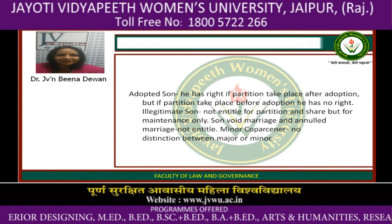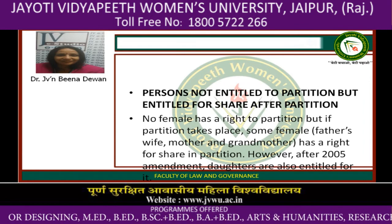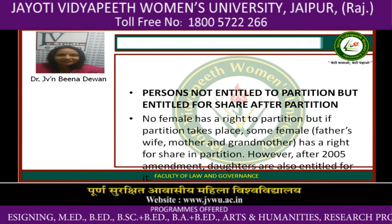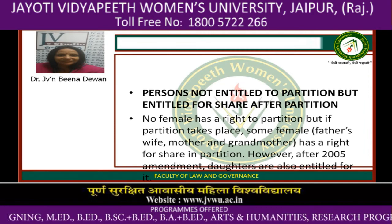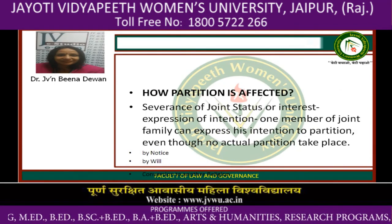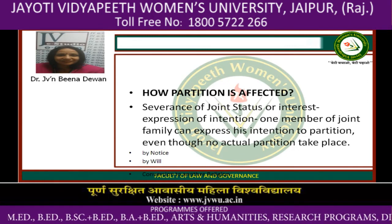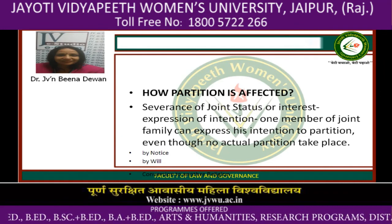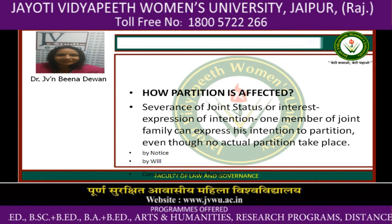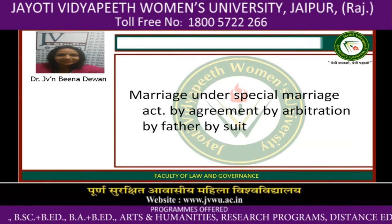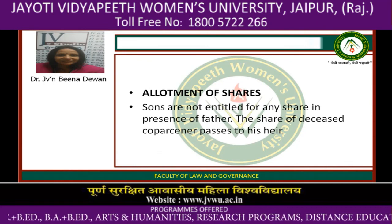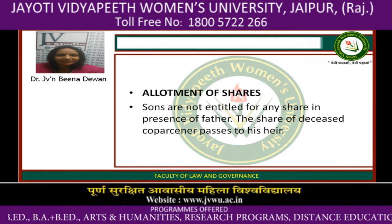Minor coparcener: no distinction between major or minor. Persons not entitled to partition but entitled to a share after partition: no female has a right to demand partition, but if partition takes place, the father's wife, mother and grandmother have a right to a share. However, after the 2005 amendment, daughters are also entitled. Severance of joint status — expression of intention: one member of the joint family can express his intention to partition even though no actual partition takes place — by notice, by will, conversion to another religion, marriage under the Special Marriage Act, by agreement, by arbitration, by the father, or by suit. Allotment of shares: sons are not entitled to any share in the presence of the father; the share of the deceased coparcener passes to his heirs.